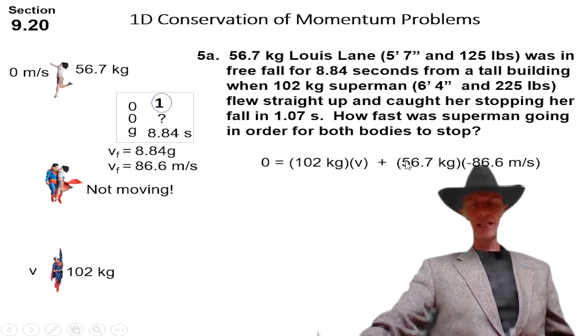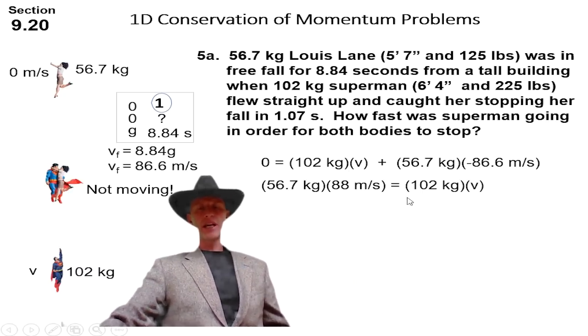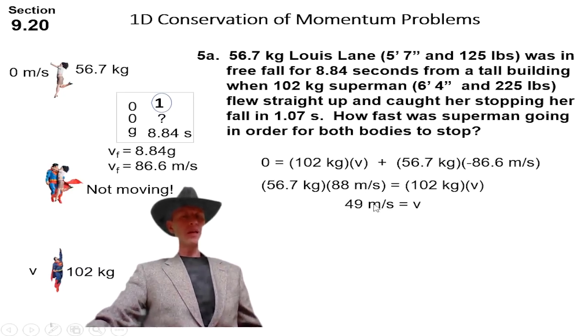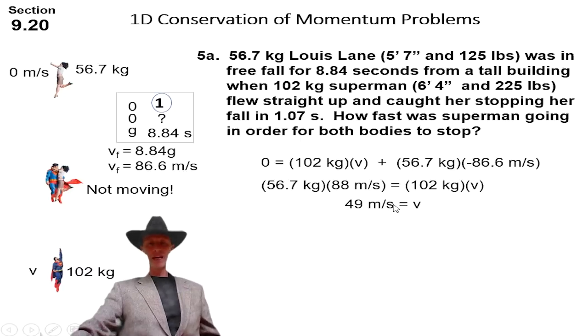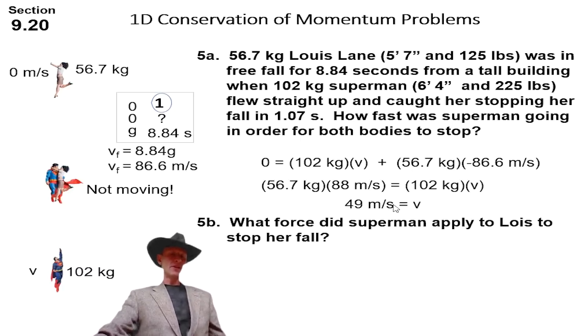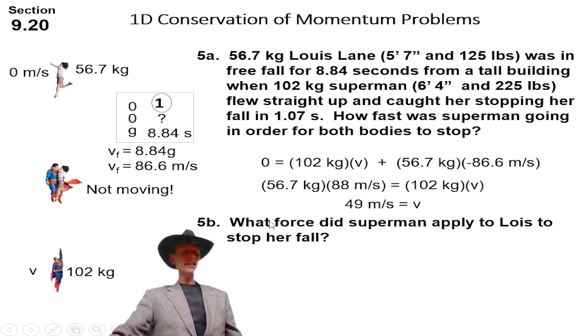So I would expect, because of his heavier mass, he doesn't have to be going as fast as she's going. So when we do our calculation, we end up with Superman must have slowed down to 49 meters per second, which isn't too bad. But he stopped her in one second, 1.07 seconds in the movie.